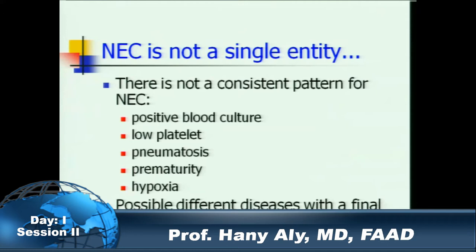Is NEC really one disease, or is it a common final pathway of multiple diseases? When you say somebody has acute respiratory failure, it can be because of meconium aspiration, surfactant deficiency, or pneumonia — but at the end you have a final picture: retractions, tachypnea, oxygen requirement. Necrotizing enterocolitis is very similar. Somebody with distention and erythema — but what caused it? Most probably there are multiple diseases, and we tend to lump them all together and say 'he has NEC.'